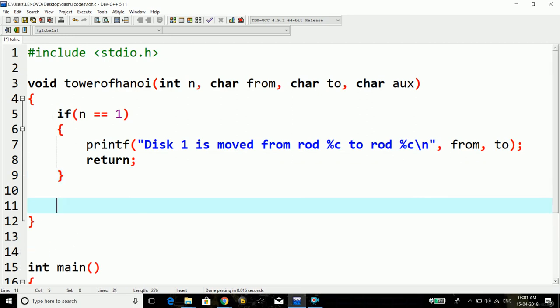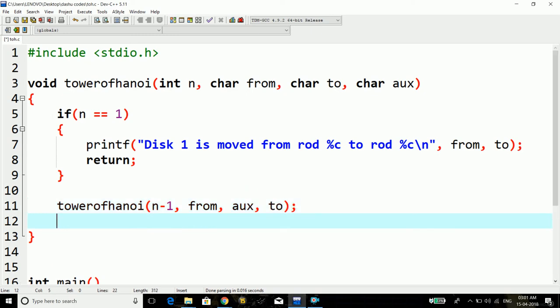And here, we'll be calling the function two more times. The first time, the recursion call of the tower of Hanoi function. The arguments will be n minus 1, then from, aux, and to.